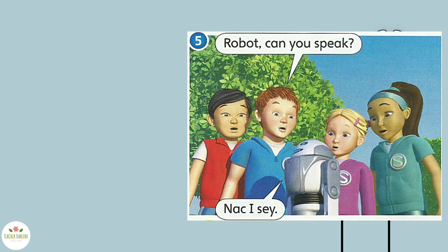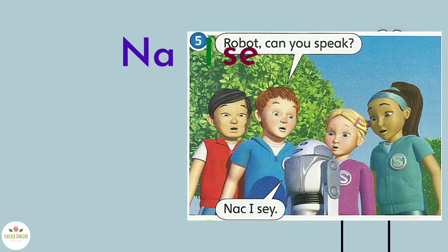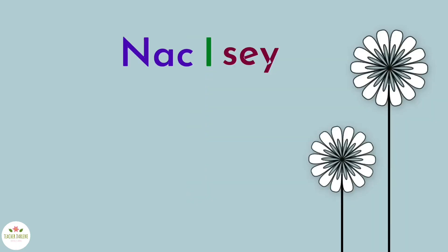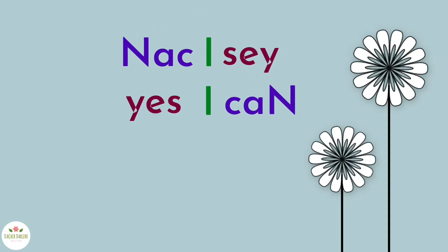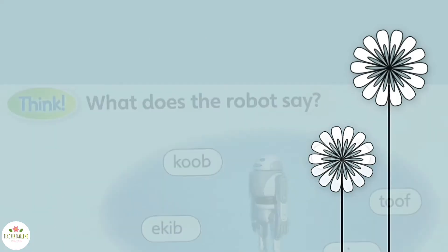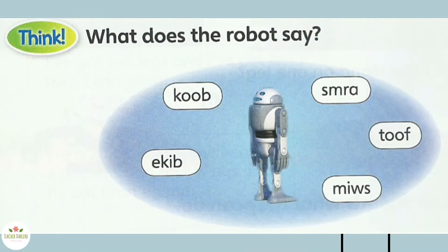Activity 2. Look at picture number 5. What does the robot say? 'Knack I say.' What do you think 'Knack I say' means? 'Knack I say' means 'Yes, I can.' The robot talks in reverse. Look at the words. What does the robot say?